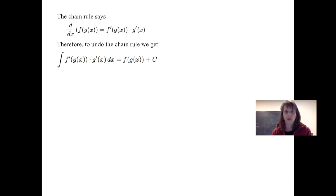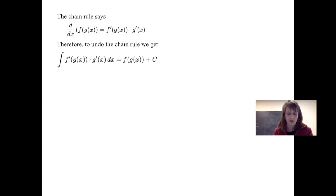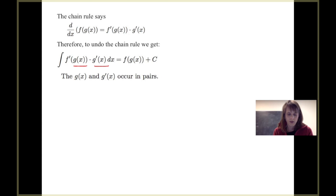As we noted, the chain rule says that when we take the derivative of a composition of functions, f evaluated at g of x, we get the derivative of f evaluated at g of x times g prime of x. Undoing that chain rule, the integral of f prime of g of x times g prime of x dx gives us f of g of x plus c. In recognizing how to perform substitution, it's really important to find g of x and g prime of x pairs.